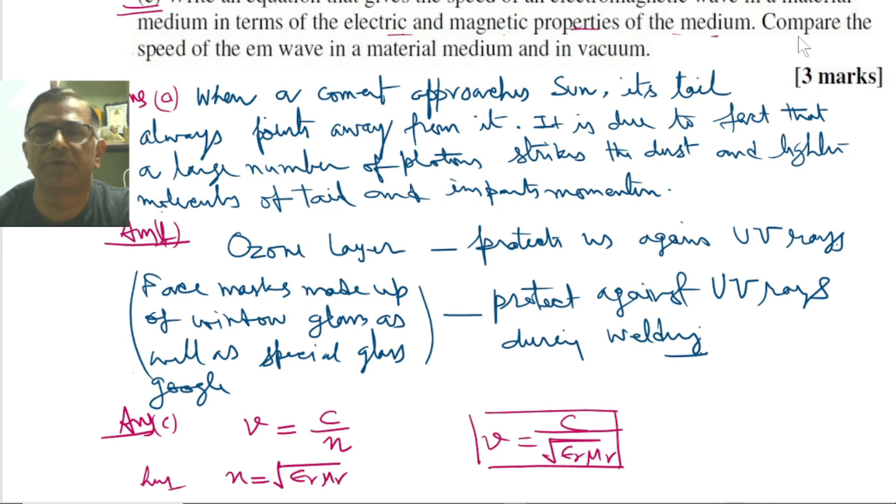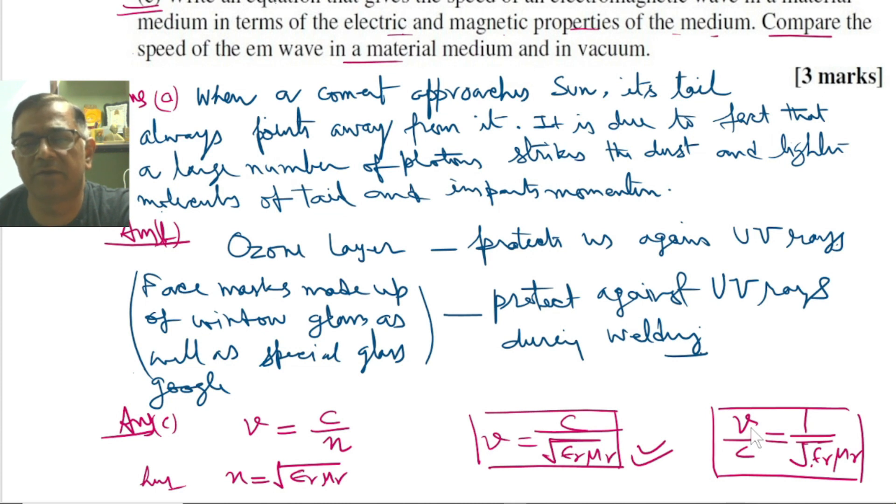Further, we are also supposed to compare the speed of electromagnetic wave in material medium and vacuum. The answer to this question is very clear from this expression itself. V by C equals 1 by square root of epsilon R mu R. So this is the expression that provides us the comparison between the velocity of light inside medium to the velocity of light inside vacuum.